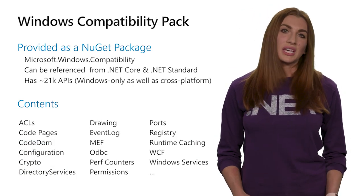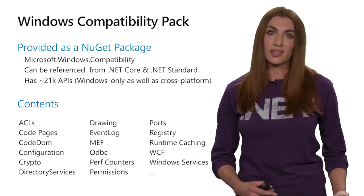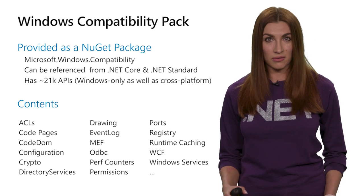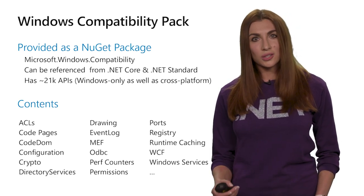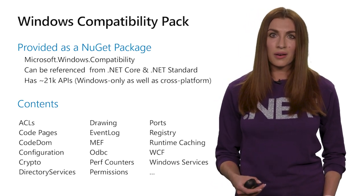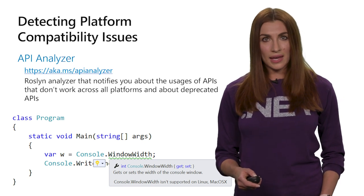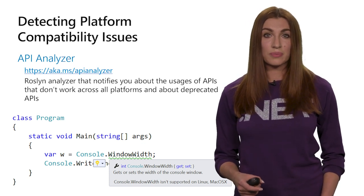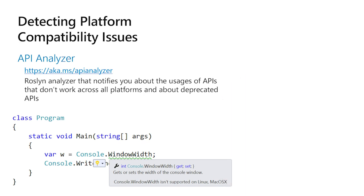If you're porting from Framework to Core, you might have dependencies on APIs that are not available in Core but are available in Framework. The Windows Compatibility Pack can help resolve that. It's distributed as a NuGet package and has 21,000 APIs from the Framework that weren't included in .NET Standard, but you can still use them targeting .NET Core or .NET Standard. If you install the Compatibility Pack, you'll also want to install API Analyzer — a Roslyn tool that warns you whenever you're using an API that is not cross-platform or is deprecated, so you can make decisions about platform risk while coding.